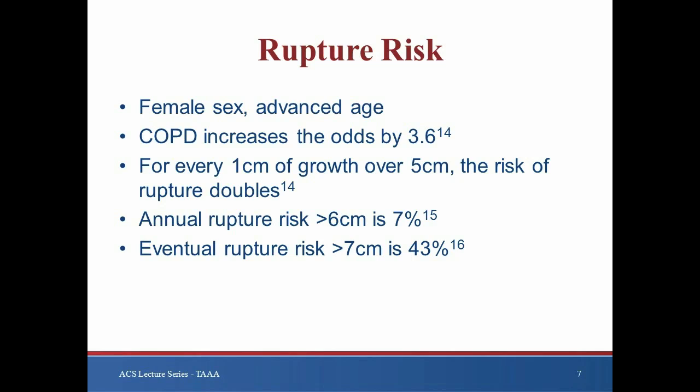With respect to comorbidities, COPD has been shown to significantly increase the odds of rupture by 3.6. The transverse diameter of the aneurysmal aorta is directly related to the risk of rupture. It has been shown that for every 1 cm of growth over 5 cm in the descending thoracic aorta, the risk of rupture nearly doubles, resulting in an annual rupture risk for aneurysms greater than 6 cm of 7%. Among patients with TAAAs greater than 7 cm, 43% will eventually progress to dissection or rupture.